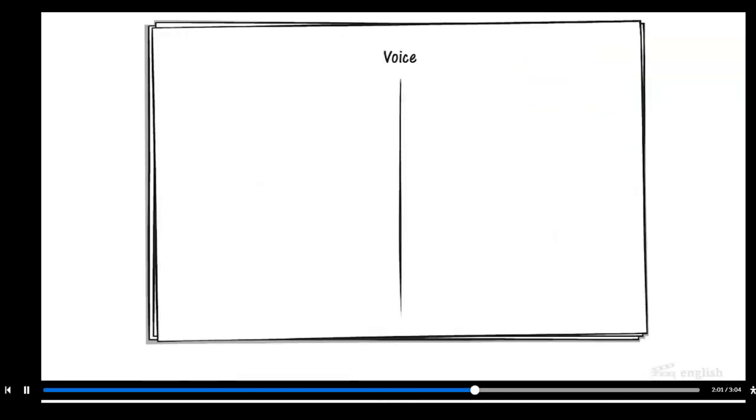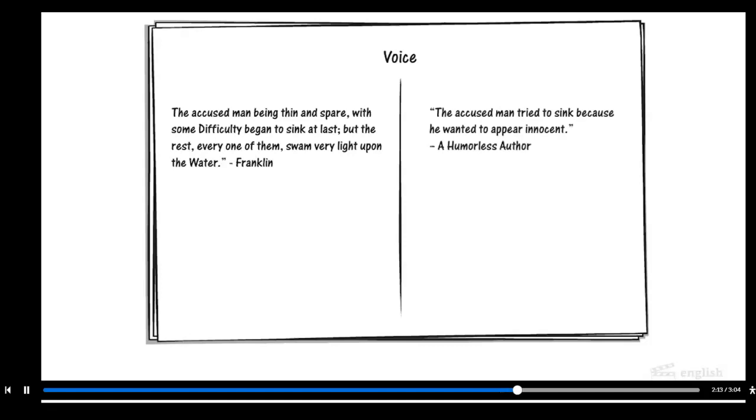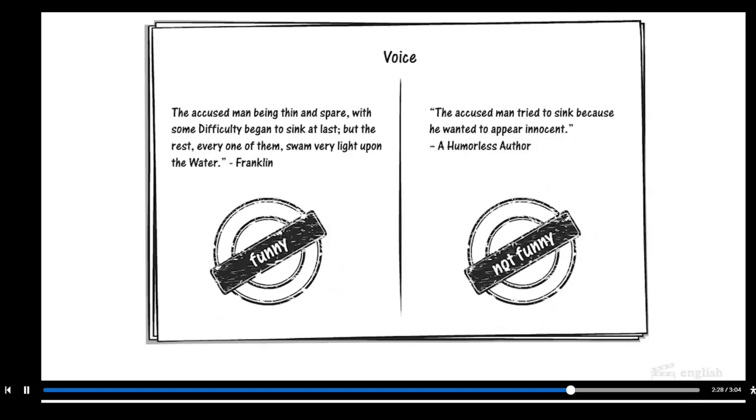Franklin's voice throughout the piece is unique for its wry playfulness. In this line, Franklin does not directly state that the accused man fought to sink in order to appear innocent, which is what happened. Such directness would not be as humorous. Instead, Franklin makes use of his playfully indirect voice to state that the man sank with difficulty and he compares him to the others who stayed very light upon the water, implying the humorous action rather than directly stating it, a hallmark of satire.